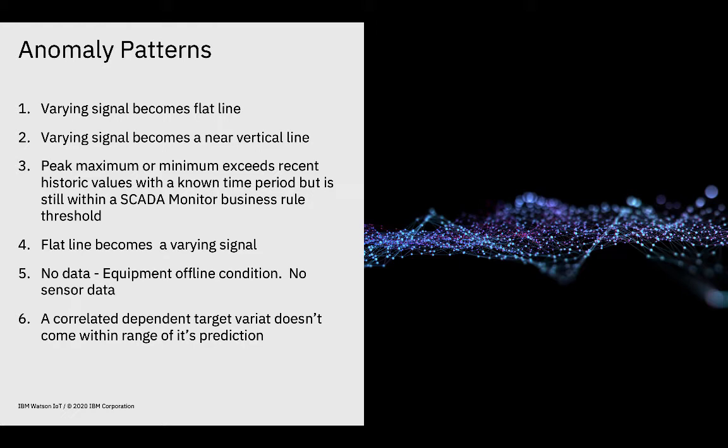The fifth pattern is around making sure you have the data you need to detect an anomaly. If the equipment is offline or there's no sensor data, that could be an indication of a no-data anomaly. The sixth type of anomaly pattern is really around a correlated set of features and targets that are not coming within a predicted range. Unlike the first five, those patterns could be detected looking at a single metric, whereas number six really depends on multiple variants or multiple features that you're evaluating to see whether the target achieves its predicted value.